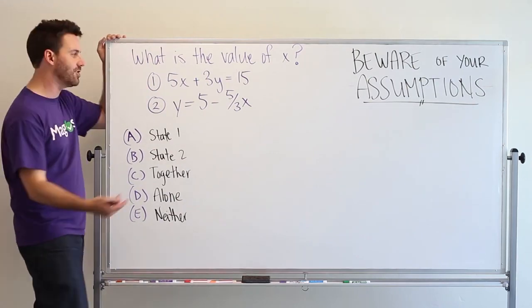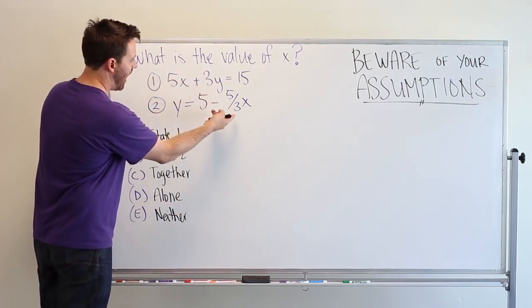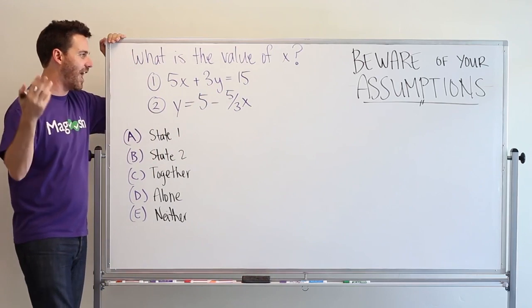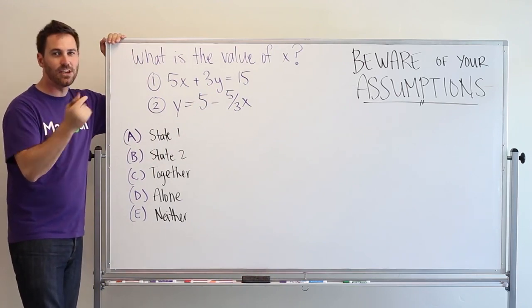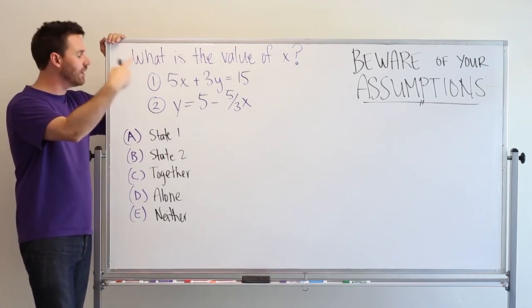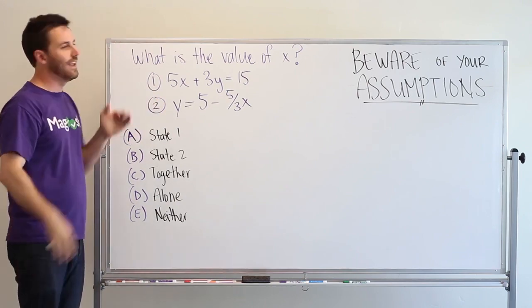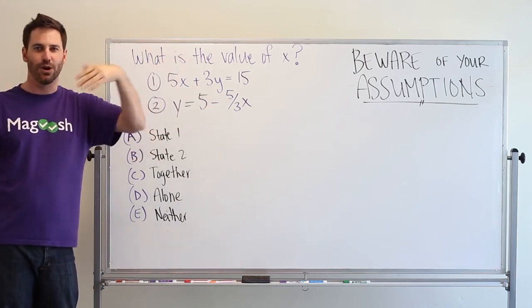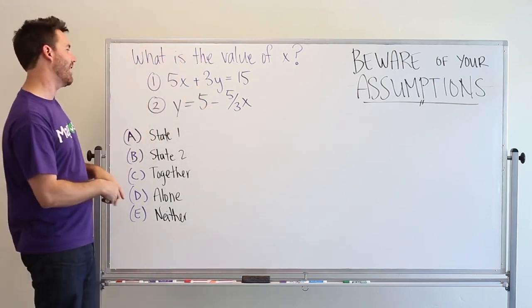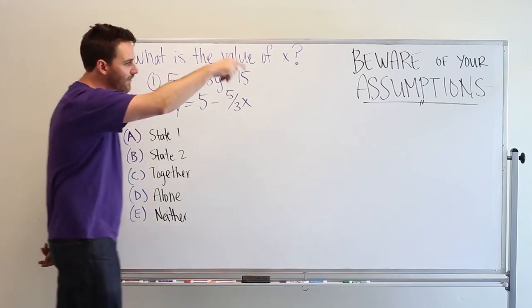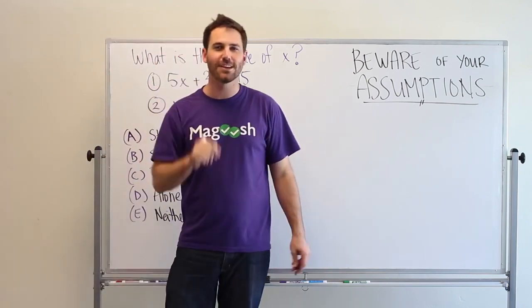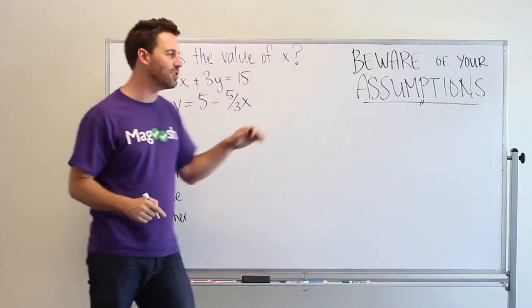I look and see I have two linear equations with two variables. I know that if I have two variables and I have two linear equations with those variables, I can solve for any one of those variables. And I'm like alright, I just need both of these, c moving forward. But you just got that question wrong because of assumptions.